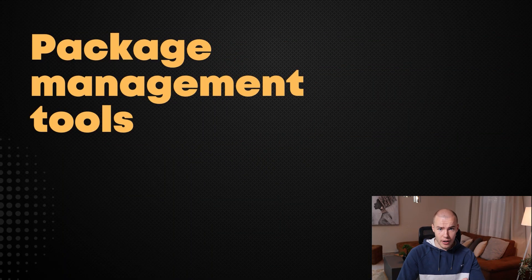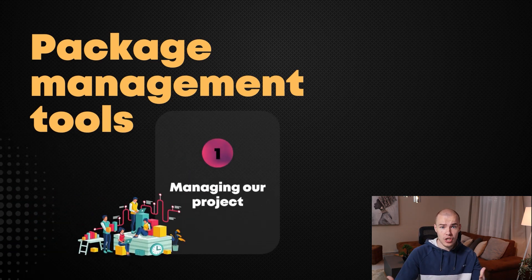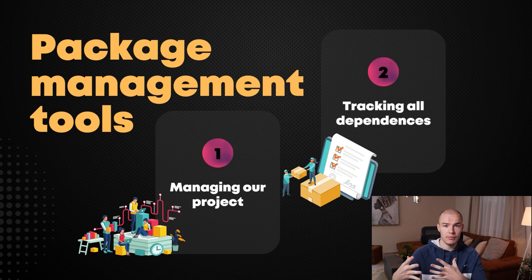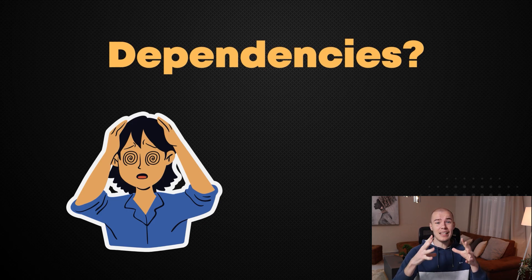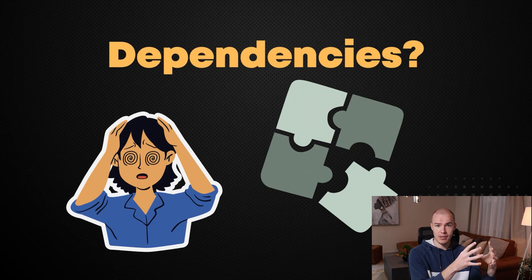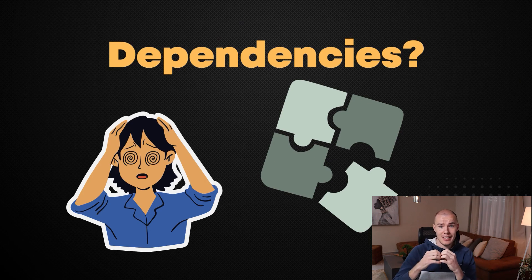What are package management tools and what do they do for us? They basically manage our project and track all the dependencies it's using. Dependencies are a very simple concept — our project relies on existing pieces of code written by somebody else. That external code, when being used in our code, is a dependency. A dependency is a piece of code that is included inside our code, and package managers include that external piece of code into our project.